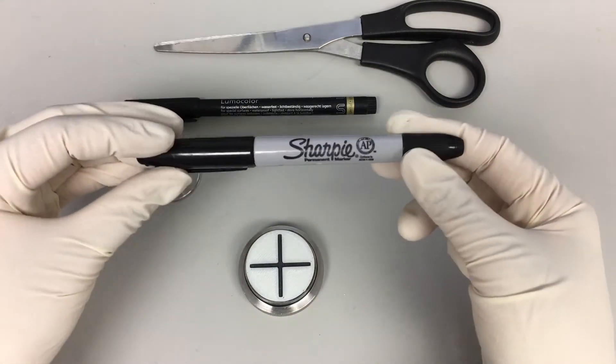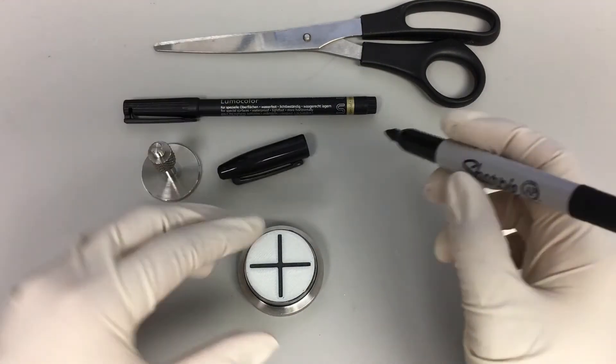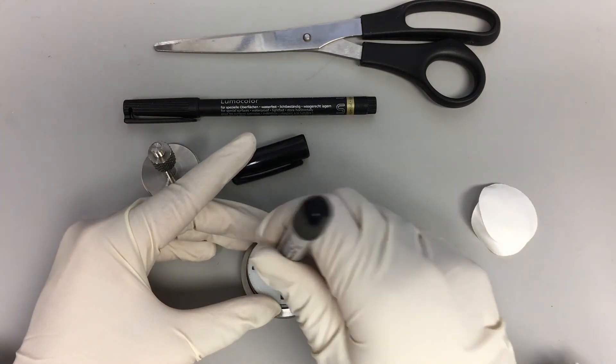Using a permanent marker, trace a cross on the sandpaper side of the sample holder by using a circular stencil with a diameter of 37mm.